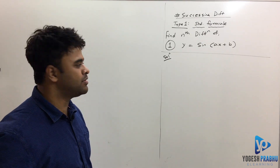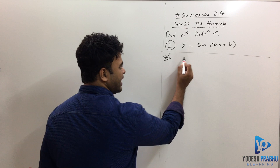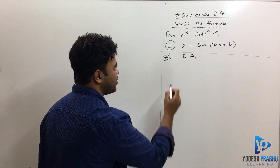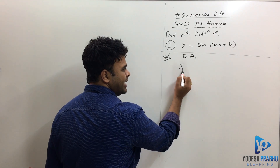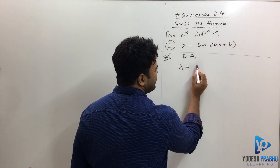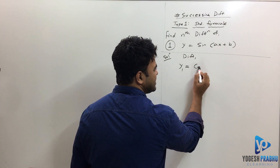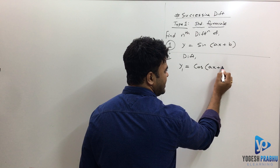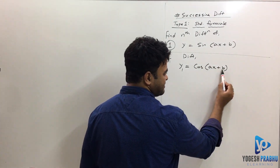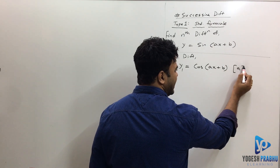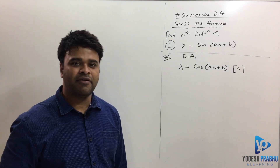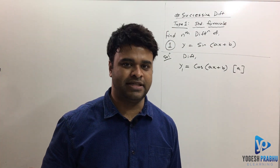Once you have y equal to sine of ax plus b, the first thing you do is differentiate with respect to x. The first derivative, y1, is the derivative of sine of ax plus b, which gives cos of ax plus b — sine becomes cos after differentiation. Applying the chain rule, we differentiate the inside term and get a. That's the first differentiation.